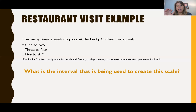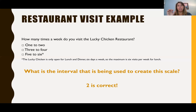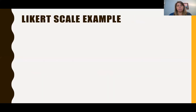But what is the interval being used to create the scale? What is the distance between each of those three categories — one to two, three to four, five to six? What is the interval? Well, if you said two, you're correct. So that's the interval between the categories, and they're equal from one category to the next.